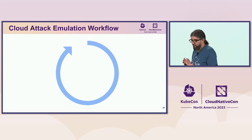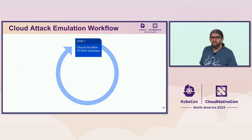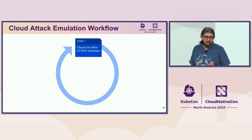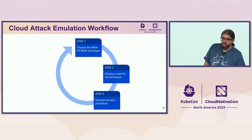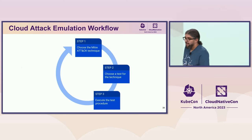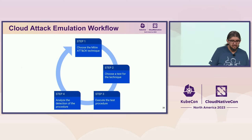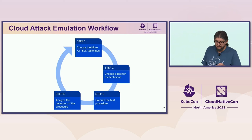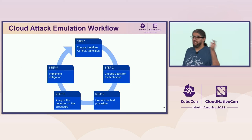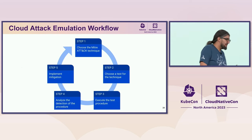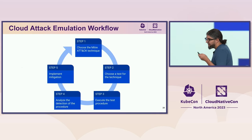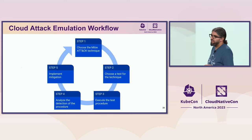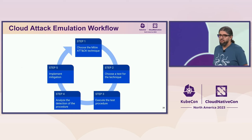How does the cloud attack emulation workflow work? First, choose one MITRE ATT&CK technique to test atomically and elementally, one at a time. Execute the procedure, get the results, analyze them, and determine if it's a real threat. Then implement mitigation and move to the next step. It's an iterative process — it never stops, because developers continuously build new services and change existing ones, changing the attack surface. You need to think of this as continuous delivery or continuous deployment for security.